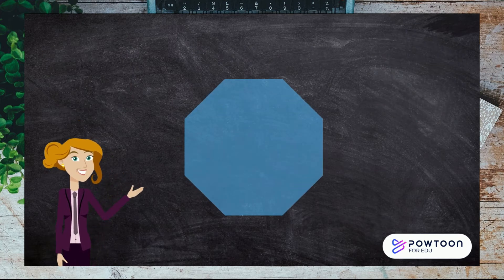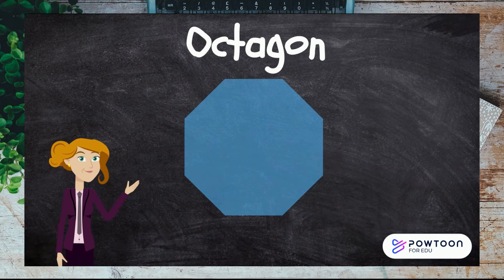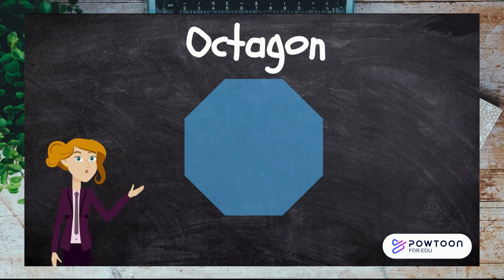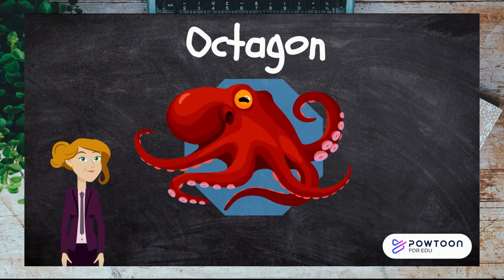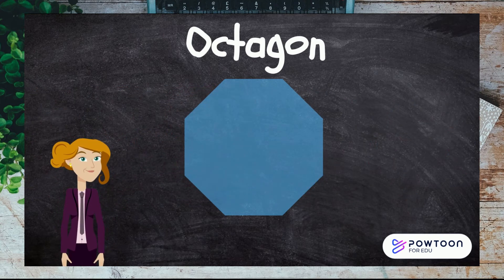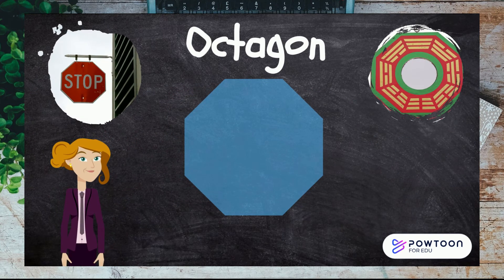This shape has eight sides. It's an octagon, and the way to remember that an octagon has eight sides is that an octagon sounds a bit like an octopus, which has eight legs. You will have seen octagons around on street stop signs. Where else have you seen them?